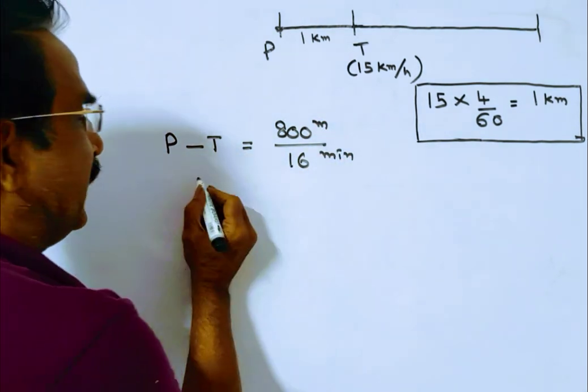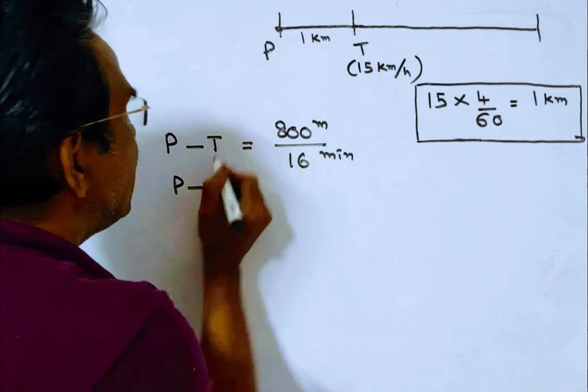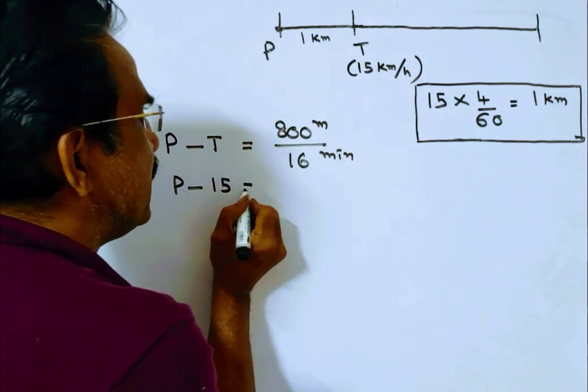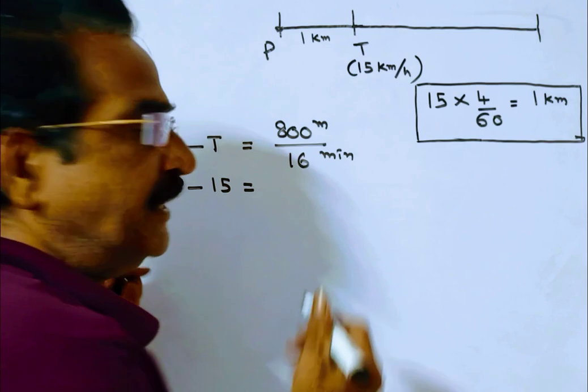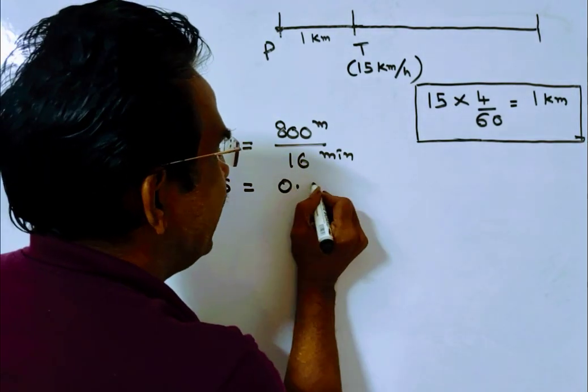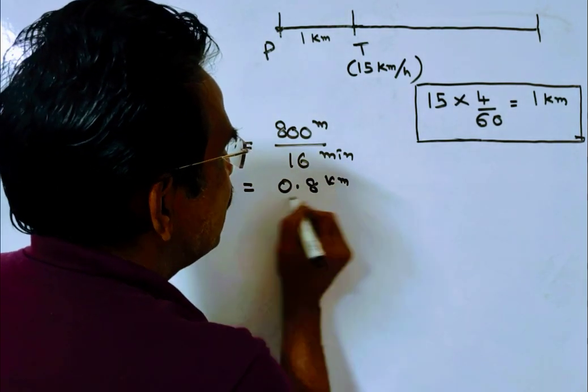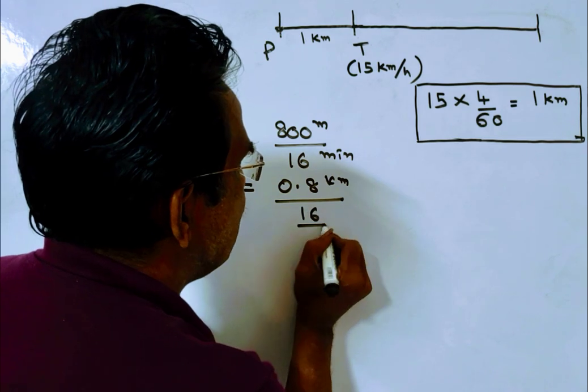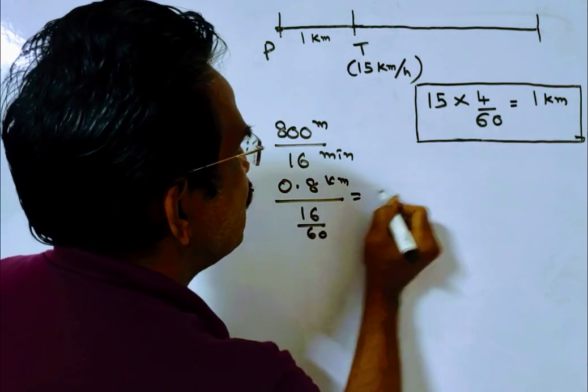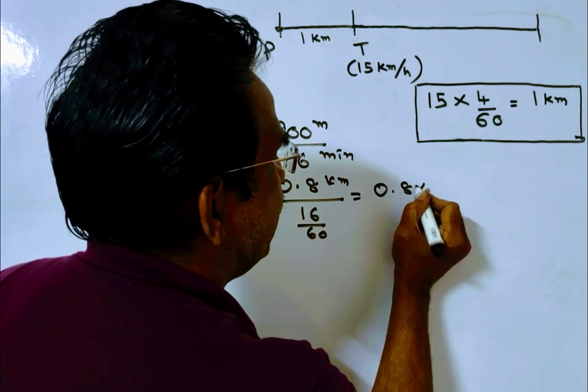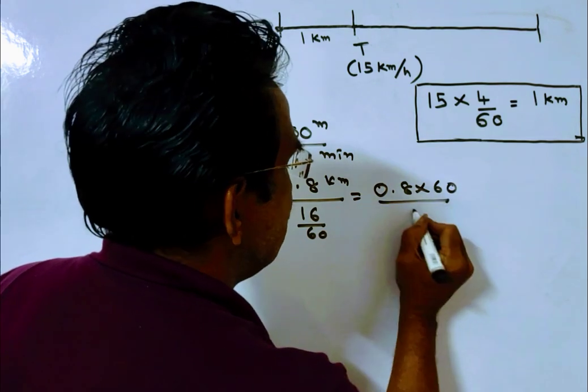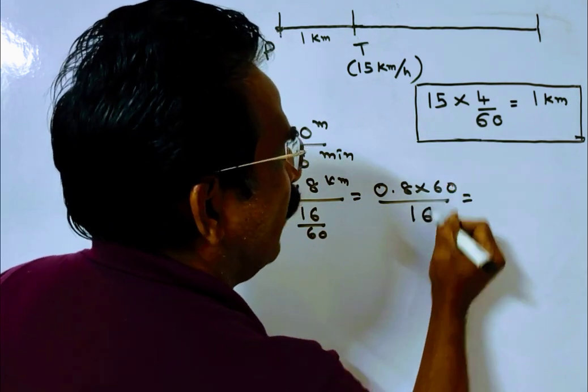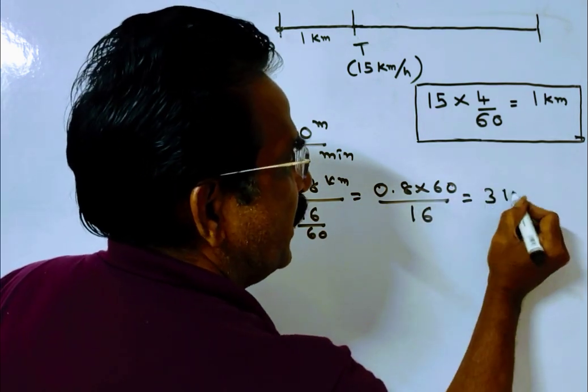P minus T equals 800 meters, which is 0.8 km divided by 16 minutes. This equals 0.8 times 60 divided by 16, which equals 48 divided by 16, equals 3 kmph.